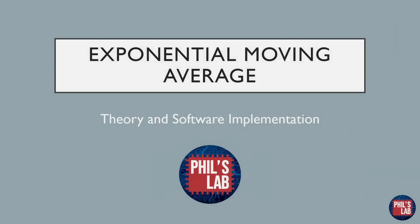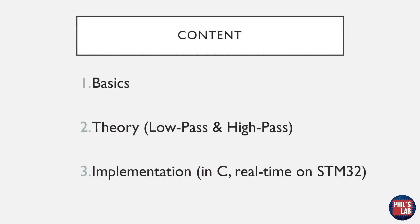The digital filter we'll be looking at is called the Exponential Moving Average Filter. The name sounds complicated, but the actual implementation and theory is actually rather simple. We'll be looking at the basics of digital filtering, why we need this filter, then the theory looking at low-pass and high-pass versions, and also implementations along the way.